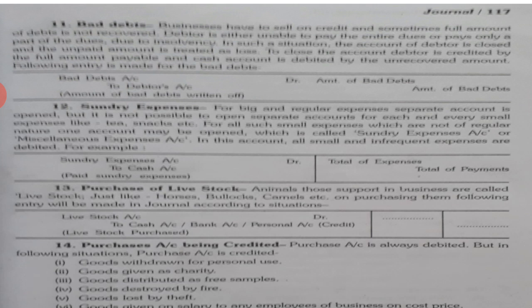Next entry is purchase of livestock. There are some businesses in which livestock — animals like horses, bullocks, camels, goats, chickens, etc. — are used. Livestock is considered an asset and asset accounts are always debited. So, livestock account is debited to cash or to bank, or to a personal account if it is on credit.